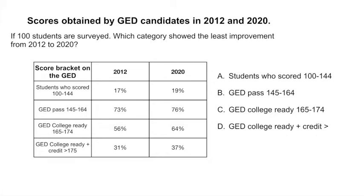Let's quickly look at the table. If you look on the far left, it's telling you the bracket of scores. There are students who scored between 100 to 144, and students who passed, meaning they scored over 145.